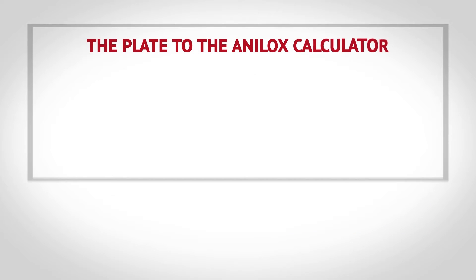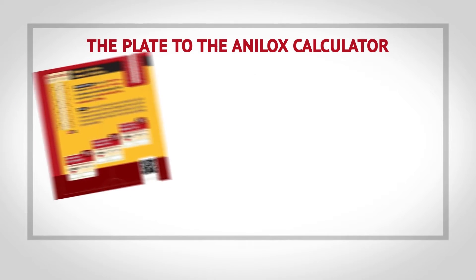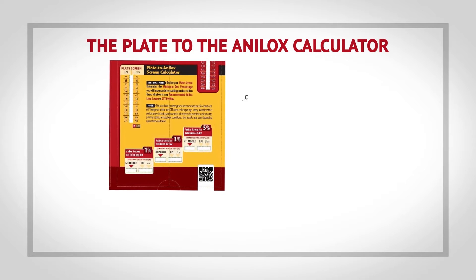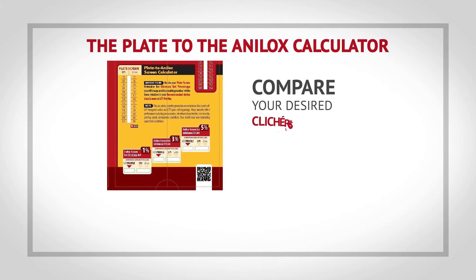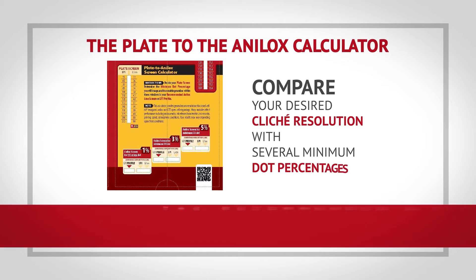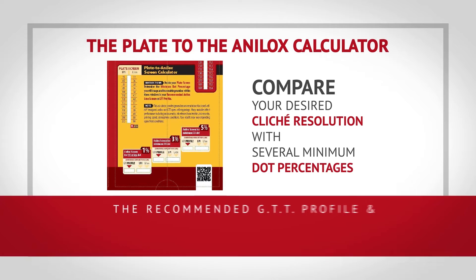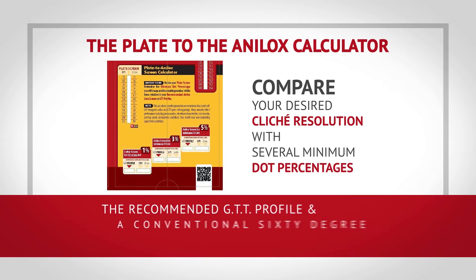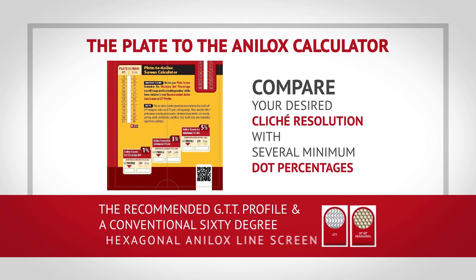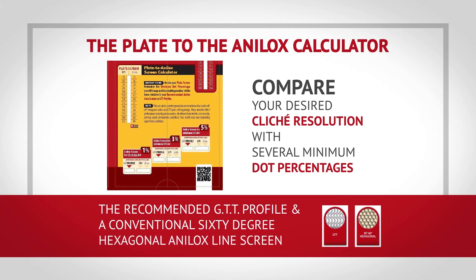The plate-to-analogs calculator is a standalone tool designed to help you compare your desired cliché resolution with several minimum dot percentages, providing you with the recommended GTT profile and a conventional 60-degree hexagonal analogs line screen to get the job done.